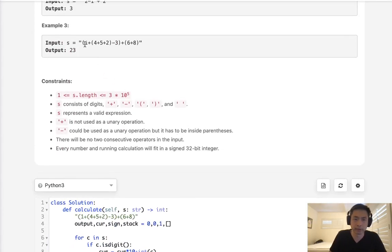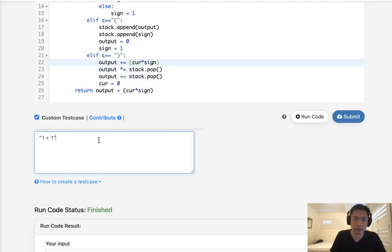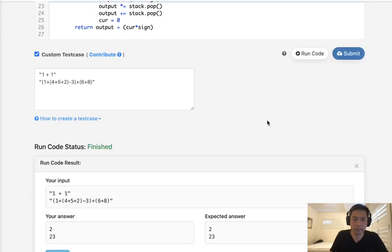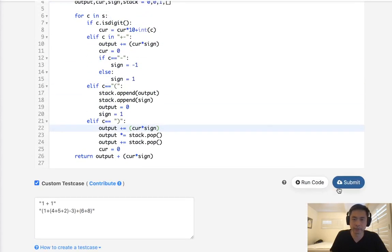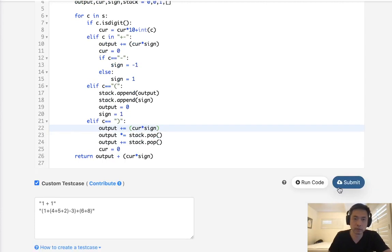Let's just do a more complicated expression just in case. Okay. So, that looks like it's working. Let's go ahead and submit. So, there you go. Accepted. This is O of n time complexity. And space would be the same because of our stack.